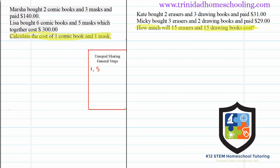For unequal sharing, the general first step is to subtract something. Now let's look at what we have here. Marsha bought two comic books and three masks and paid $140. Then Lisa bought six comic books and five masks which together cost $300. I'm going to use letters to represent these items — C for comic books, M for masks.